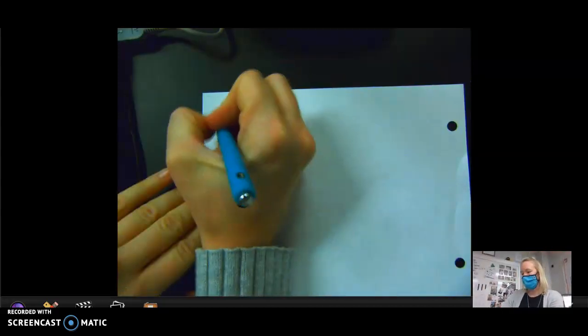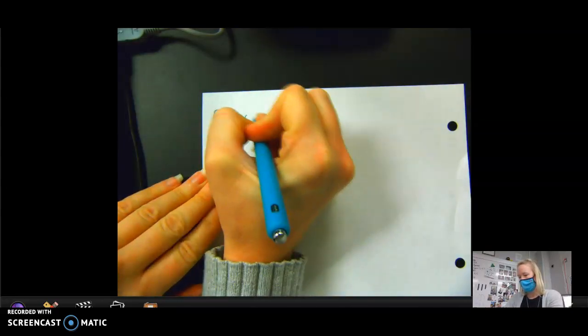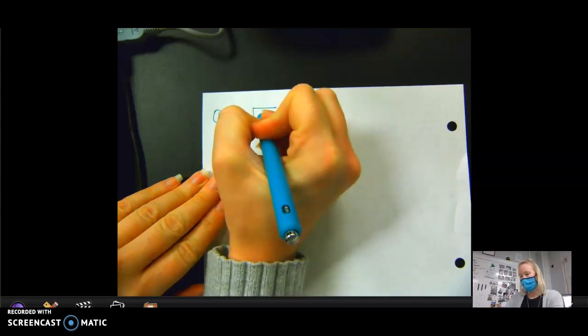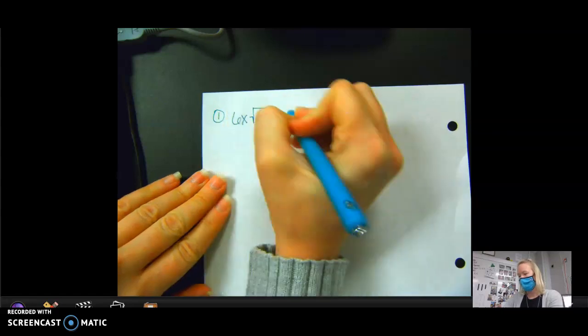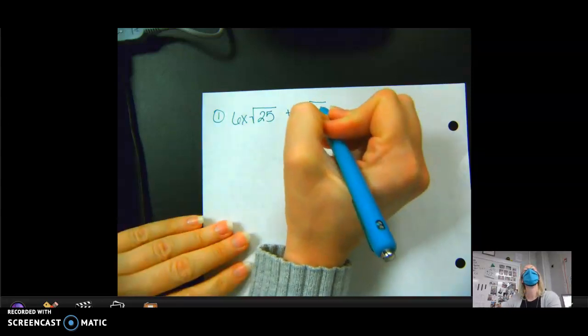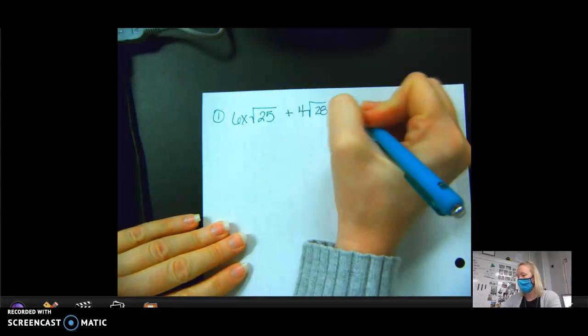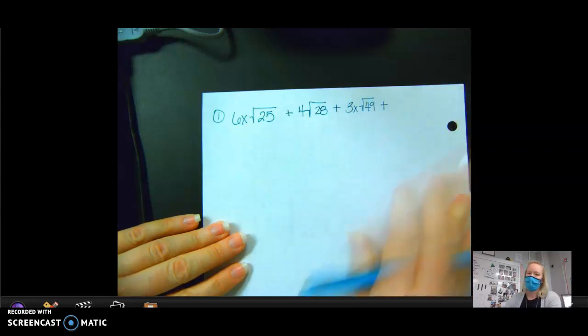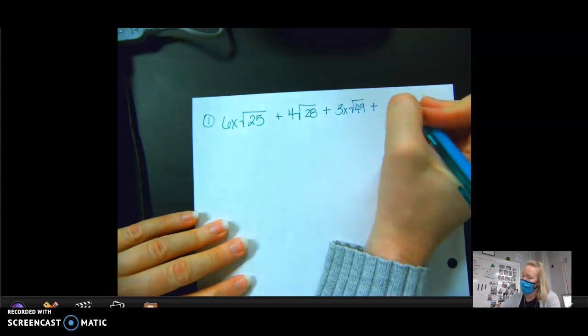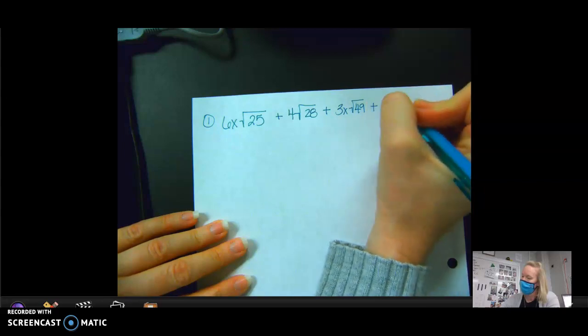Alright, you put me on the spot to make one up. Okay, so everyone go ahead and take a sheet of paper out. Let's try these: 6x square roots of 25 plus 4 square root of 28 plus 3x square root of 49 plus square root of 175.